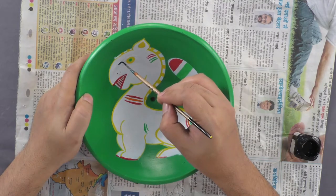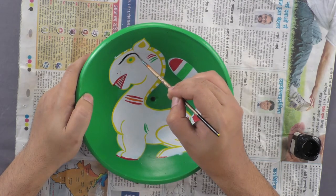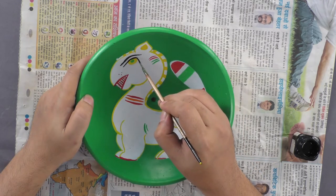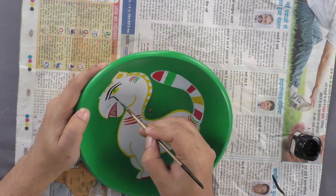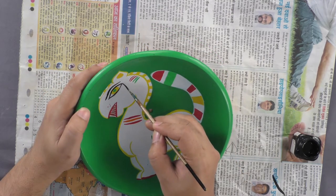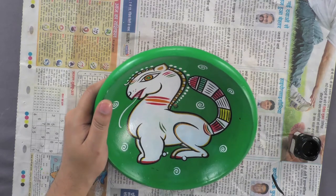Using black color, draw the eyes of the animal that we have painted on the bowl. Also paint the outline of the figure with black fabric color and your earthen bowl painting is complete.